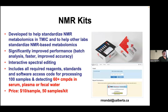We've also developed NMR kits. The idea is to help standardize things and make other labs standardize how they do NMR. We've introduced new software tools that make it very fast and allow you to interactively work with the spectra. The kits have all the reagents, standards, and software. You can analyze up to 60 or more compounds in different samples. This is much cheaper than GC and LC—about $10 per sample.